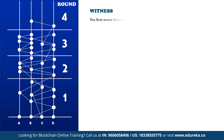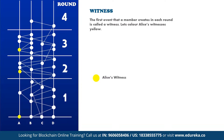Now let's understand witnesses. The first event that a member creates in each round is called a witness. Alice's witnesses are colored yellow — A1 is the witness in round one, A2 in round two, and A3 in round three. It's also possible for a member to have no witnesses in a given round. Bob's witnesses are colored red: B1, B2, B3, and B4. Carol's witnesses are colored green: C1, C2, and C3. Dave's witnesses are colored brown: D1, D2, D3, and D4.